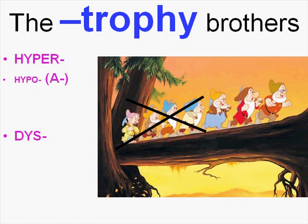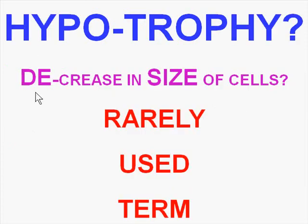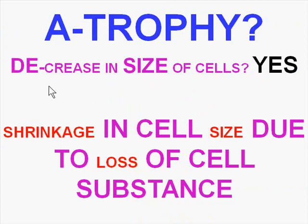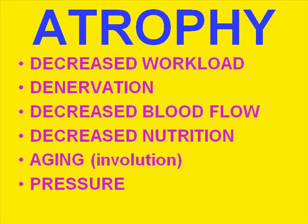Hypotrophy means decrease in size of cells — a rarely used term; atrophy is more commonly used, referring to shrinkage in cell size due to loss of cell substance. What causes atrophy? Classically, there are a whole bunch of things. For example, taking muscle as the prime example: if the muscle has decreased workload, the cells will get smaller — the myocytes, the muscle fibers. That's one cause of atrophy — simply because you don't have to pick up 300-pound weights anymore and now your job is only 30 pounds, so your muscle cells get smaller.